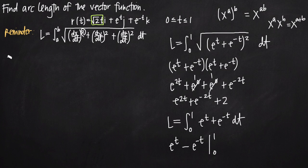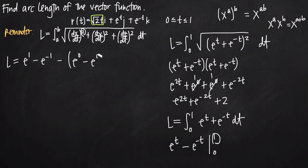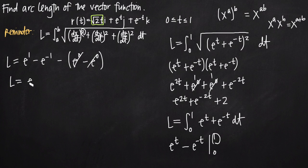Plugging in the upper limit 1: we get e to the 1 minus e to the negative 1. Then we subtract what we get at 0: e to the 0 minus e to the 0, which is 1 minus 1, so those cancel. Therefore L equals e minus e to the negative 1.